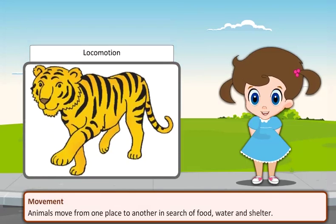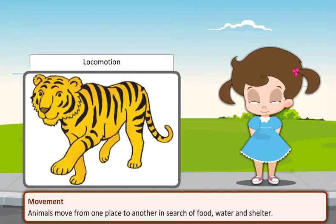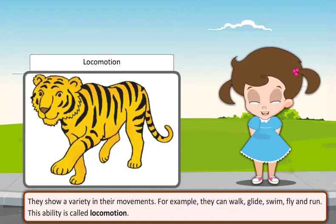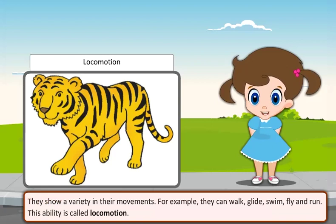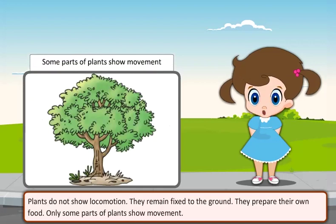Movement: Animals move from one place to another in search of food, water and shelter. They show a variety in their movements. For example, they can walk, glide, swim, fly and run. This ability is called locomotion. Plants do not show locomotion. They remain fixed to the ground.